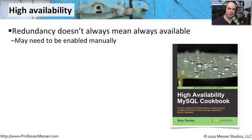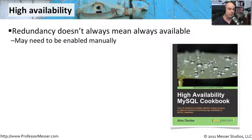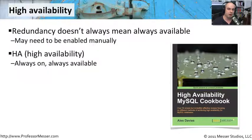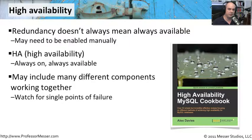Just because you have multiple servers or multiple systems with redundancy doesn't necessarily mean that your environment is highly available. High availability means that the systems will always be available regardless of what happens. With redundancy, you may have to flip a switch to move from one server to another, or power up a new system. High availability is generally considered to be always on, always available — if you lose one system, it doesn't matter, because you've got an extra system ready to take up the extra load.